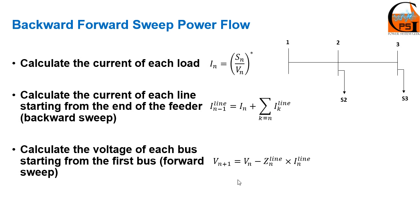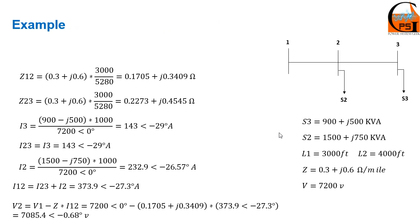The voltage for the first bus is always assumed to be 1 per unit at zero degrees. For example, to calculate the voltage of the second bus, we write V1 minus the impedance of line 1-2 multiplied by the current passing through that line. Let's look at a numerical example to understand this better. We have a system with three buses and two loads.